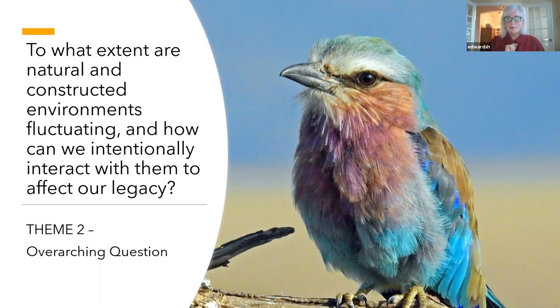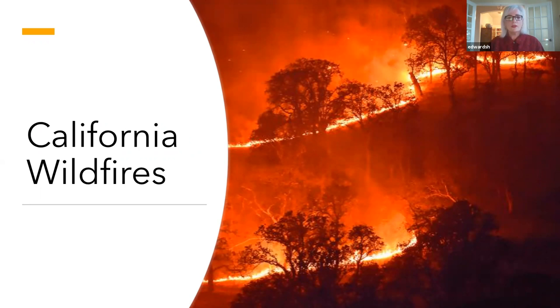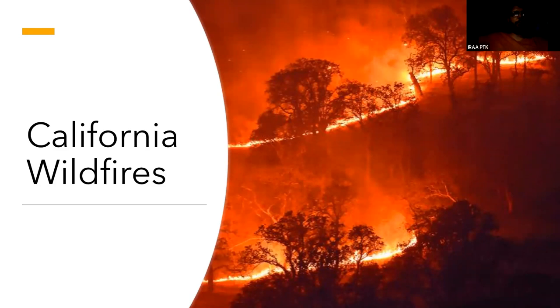This bird, by the way, is native to Africa — I think it's one of the prettiest birds on the face of the earth, which is why it's here tonight. I want to start with California wildfires. There are wildfires in Utah and Arizona and all over the West right now. Certainly this is a natural environment, and wildfires are a natural part of the environment — in fact, they're healthy for forests in the normal scheme of things.